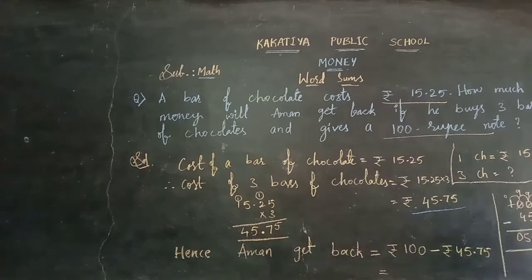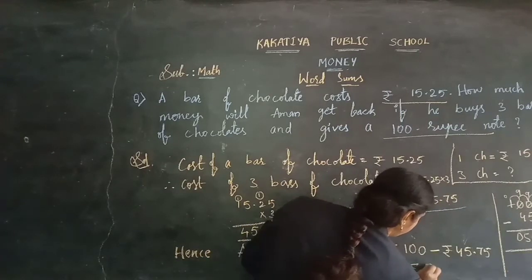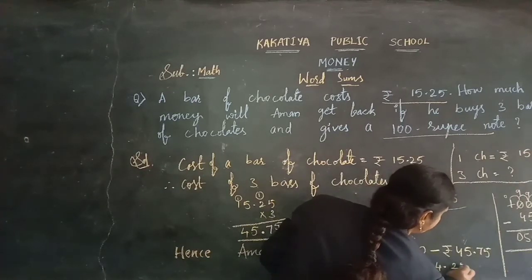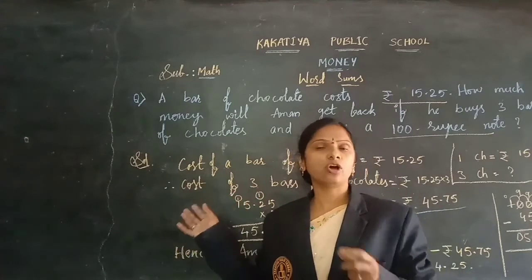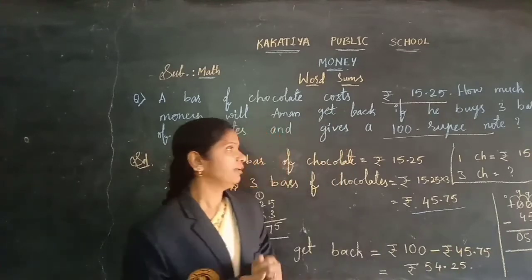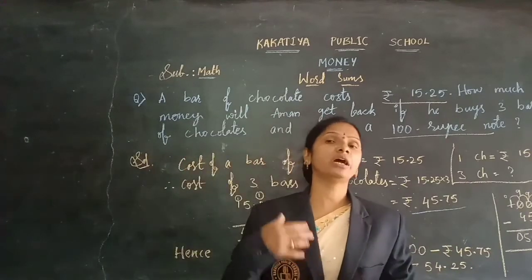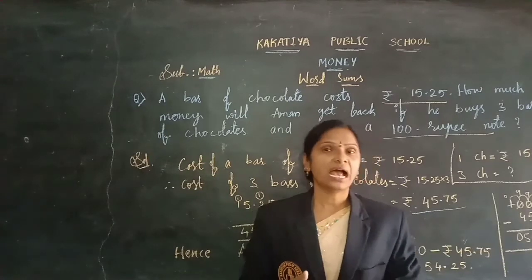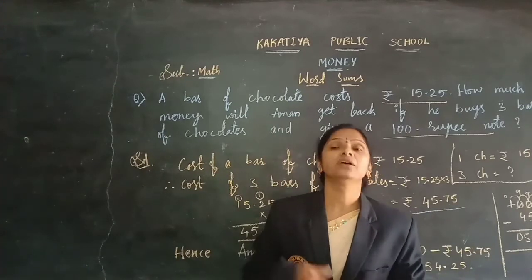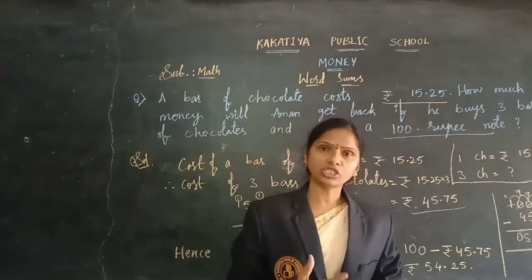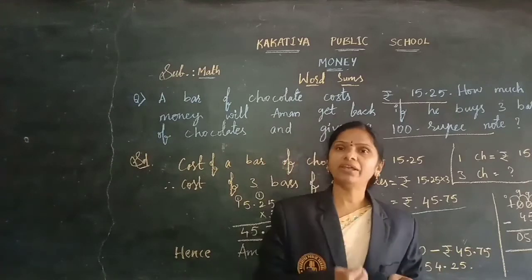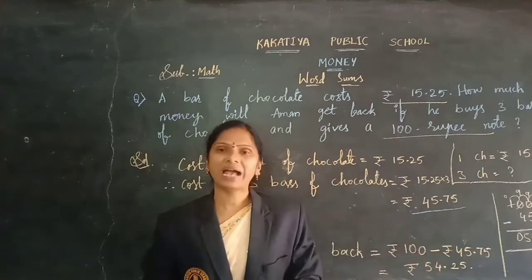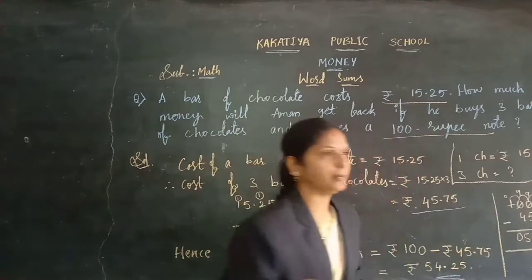How much do you get back? 54 rupees 25 paise. This is the combination of multiplication and subtraction problem, children. If you are given one cost amount and need to find out the more cost and then the get-back amount, first you need to multiply the cost of the things by how many you are purchasing, and then subtract that amount from the given amount to the shopkeeper. Then you will get the back amount. The answer is 54 rupees 25 paise.